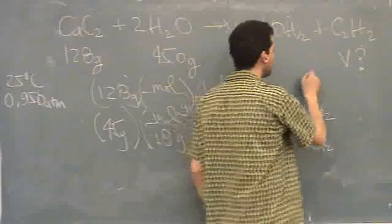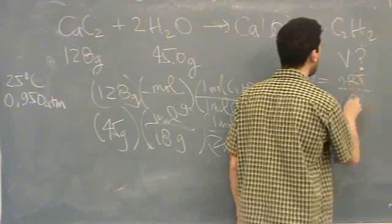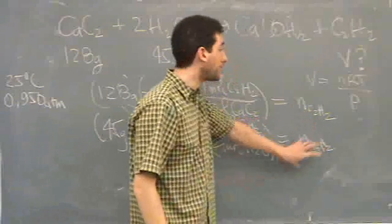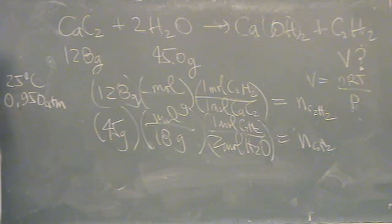And then to finish this, you say volume is N, R, T over P. N is the smaller number. T is here. P is here. You're set and keep the mole. Thank you.